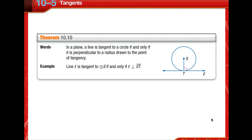The shortest distance from a tangent to the center of a circle is the radius drawn to the point of tangency. So let's look at Theorem 10-10. This says in a plane, if a line is tangent to a circle, if and only if it is perpendicular to a radius drawn to the point of tangency.